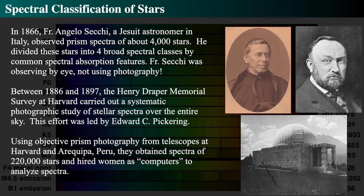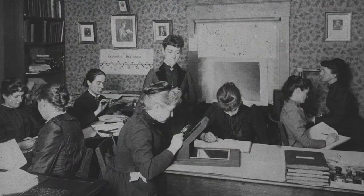Using objective prism photography from telescopes at Harvard University and in Peru, they obtained about a quarter million spectra of a quarter million stars. They then needed to organize them all, and to do this, Pickering hired a series of very intelligent women as computers — that was their job title — whose job was to analyze the spectra.